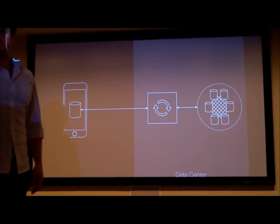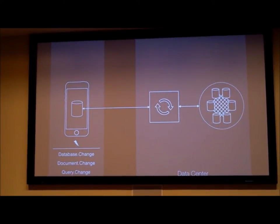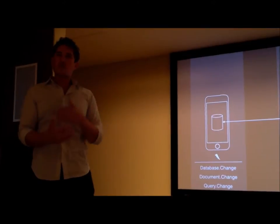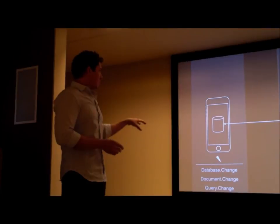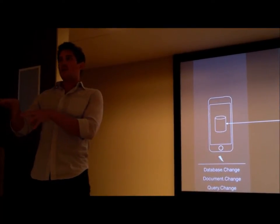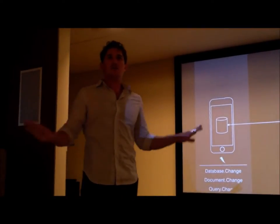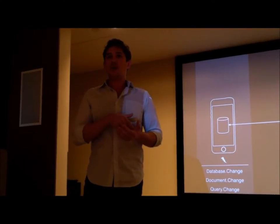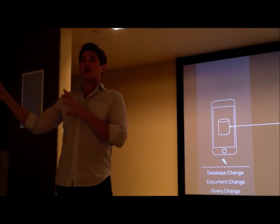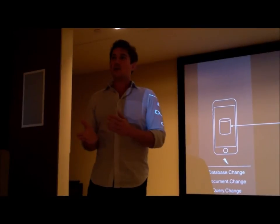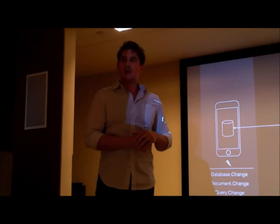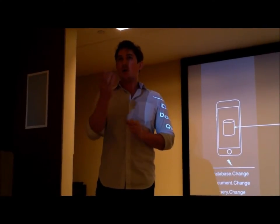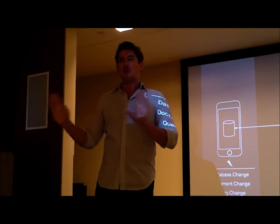You set up a Change Event Listener at the scope you want. The first scope is at the database level — you get notified when any change happens within the database, whether from local CRUD operations or during replication. This means a single code path for all data changes throughout your app — you don't need separate code for user mutations versus data coming over replication. The second scope is document change — if you want to listen to a change on a specific document, you set up the Change Event on that document's key. This is great for application settings, user profiles, or refreshing your UI when data changes on another device and replicates through.